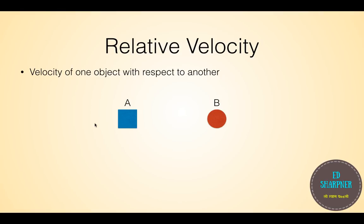Generally when we talk about velocity or any other physical quantity, there is always an observer who is considered at rest, who is outside the system — everything else moves with respect to this observer. So if body A moves with respect to body B at 5 meters per second, that's what is seen by the observer. But if we now put the observer in body B and body B moves, things change.